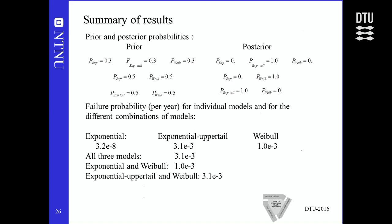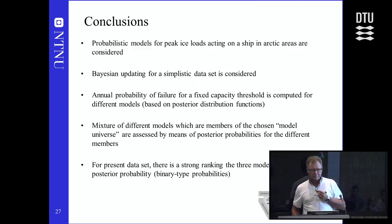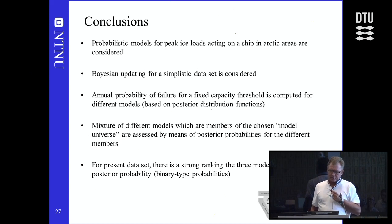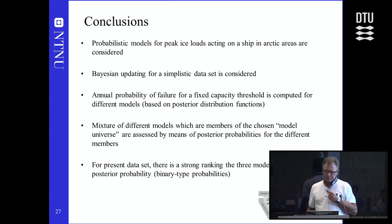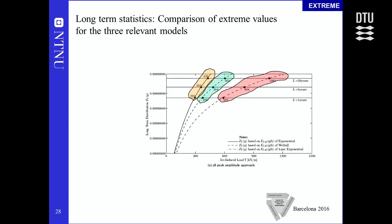Other methods exist for comparing probabilistic models, such as regression coefficients or chi-square tests, but this is the Bayesian approach applied to a small data set. Future work should examine larger data sets to see how these numbers change beyond just nine data points. In conclusion, different probabilistic models for ice loads have been examined, Bayesian updating is performed for a simplistic data set, the annual probability for a fixed capacity threshold is computed, and models in the model universe are assessed by posterior probabilities.